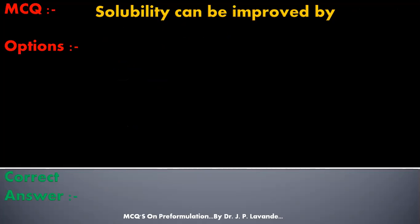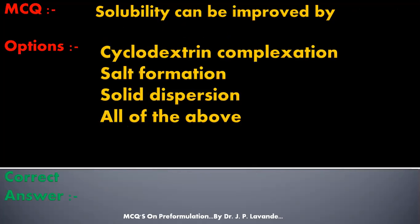Next question: solubility can be improved by — options are: cyclodextrin complexation; salt formation; solid dispersion; or all of the above. The correct answer is all of the above — solubility can be improved by cyclodextrin complexation, salt formation, and solid dispersion.